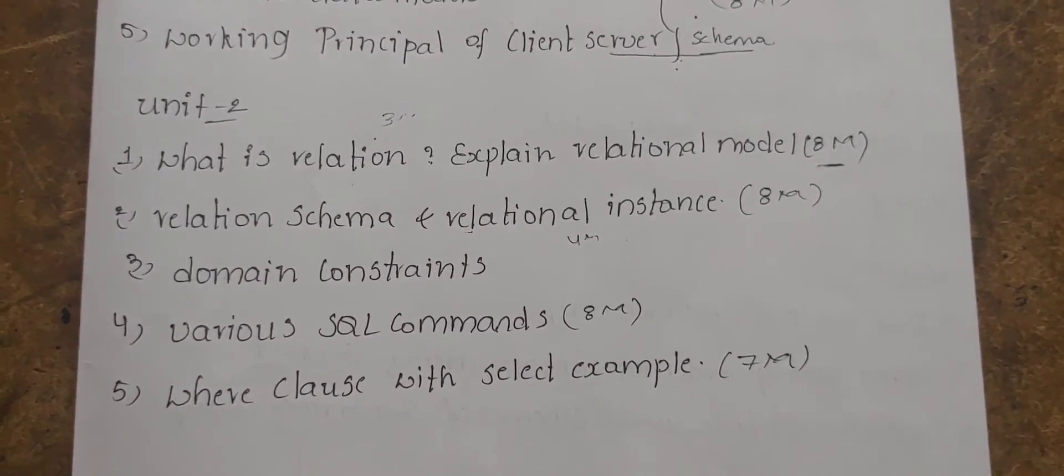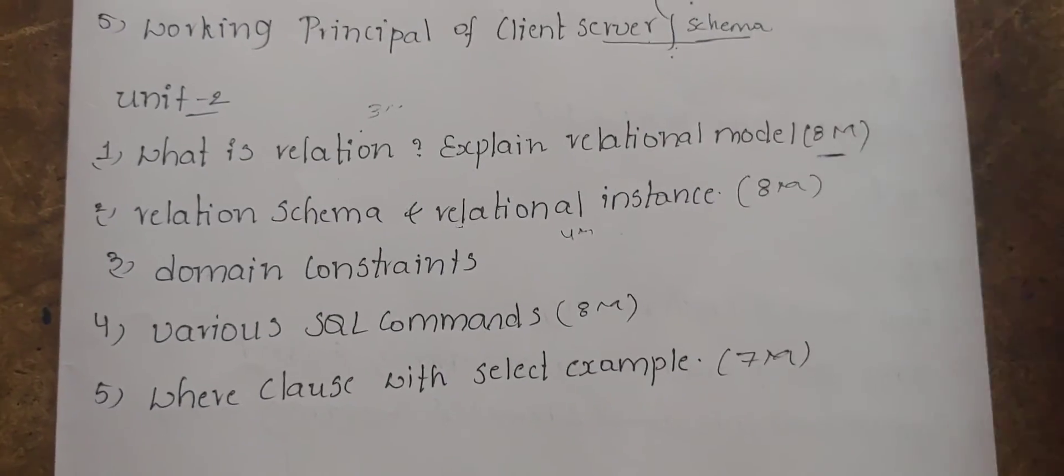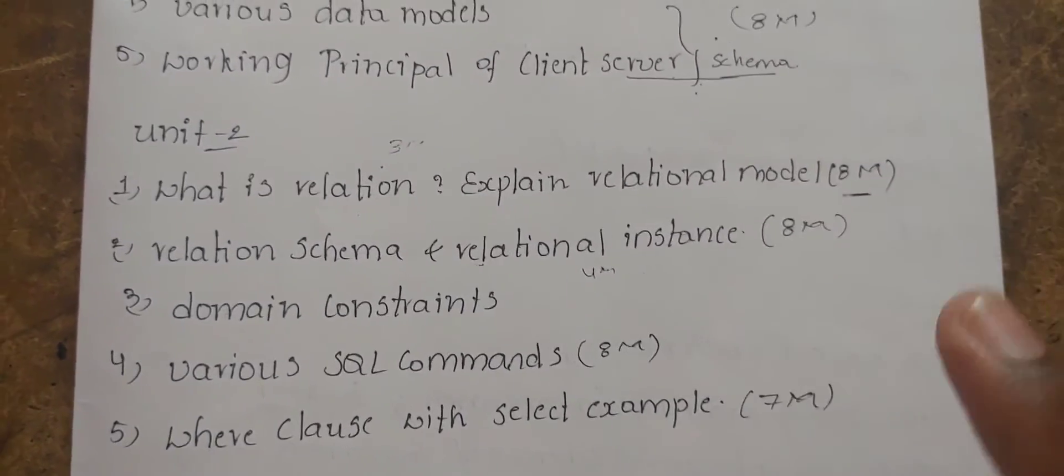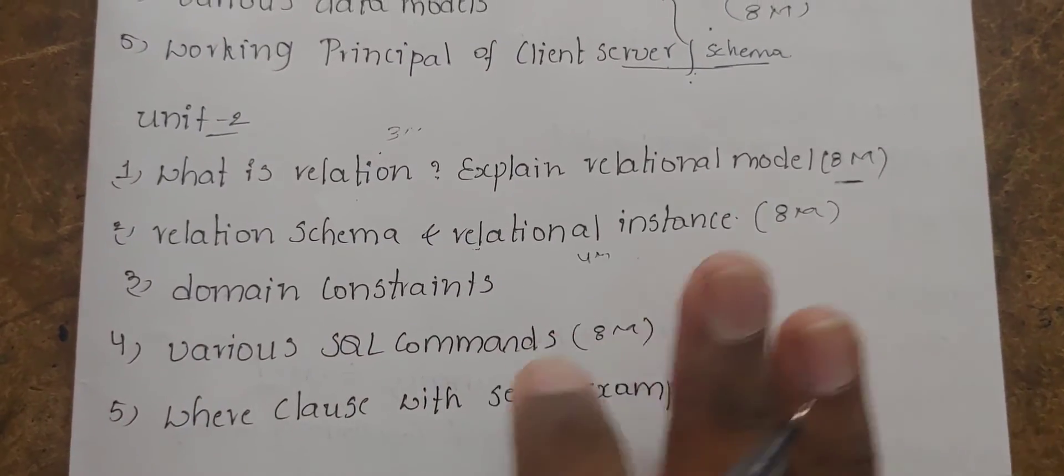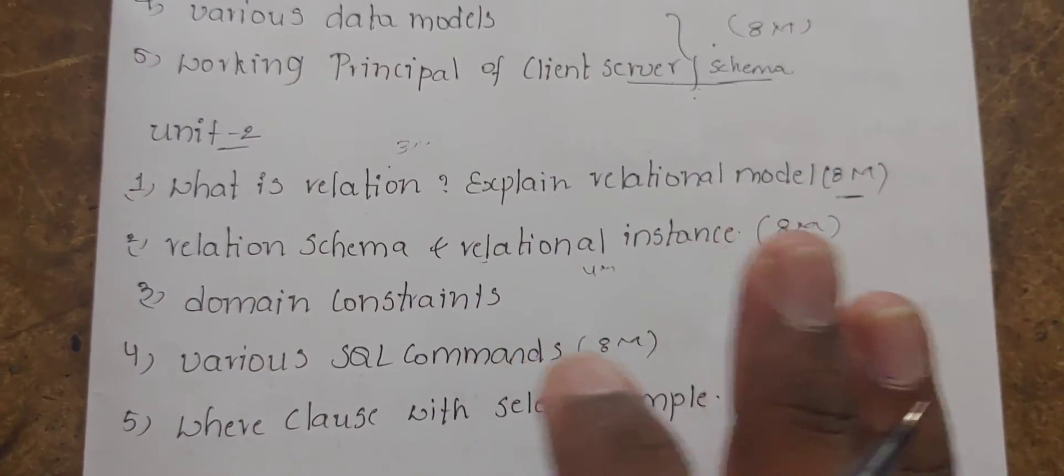Forty to fifty to eighty percent are confirmed questions. Remaining questions are changed, that is up to you. This is the safe side for you. These are the particular important questions. Unit 3 is done.